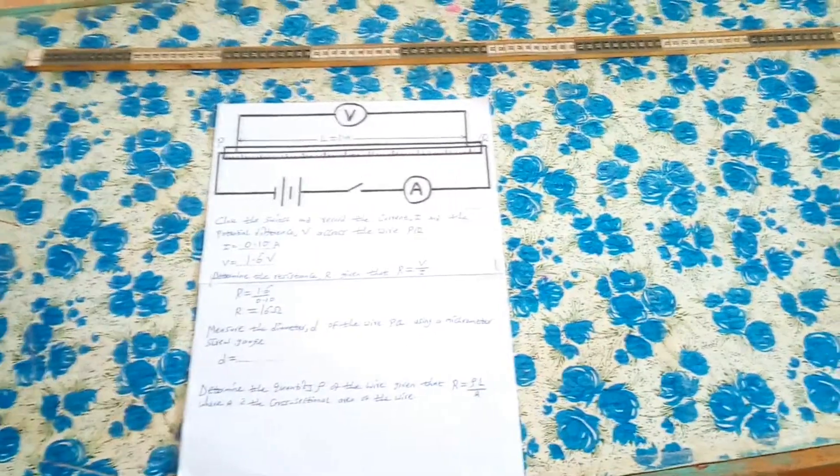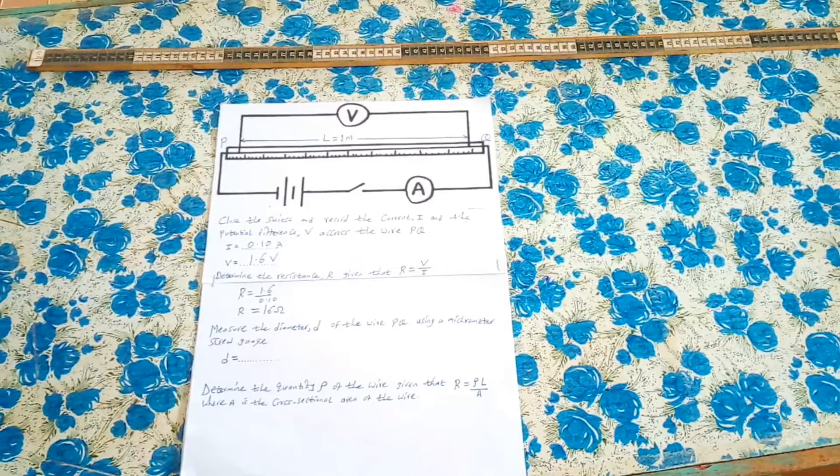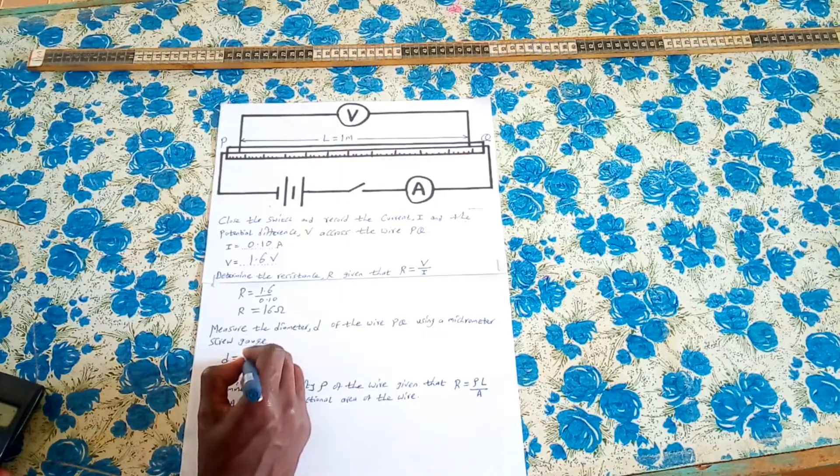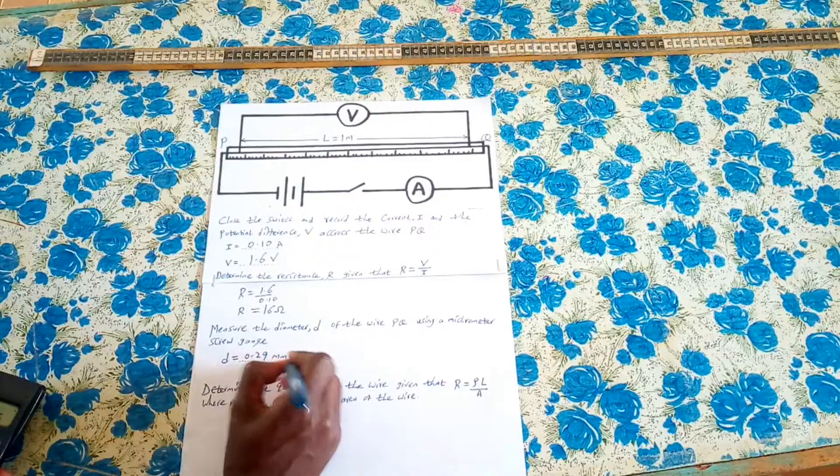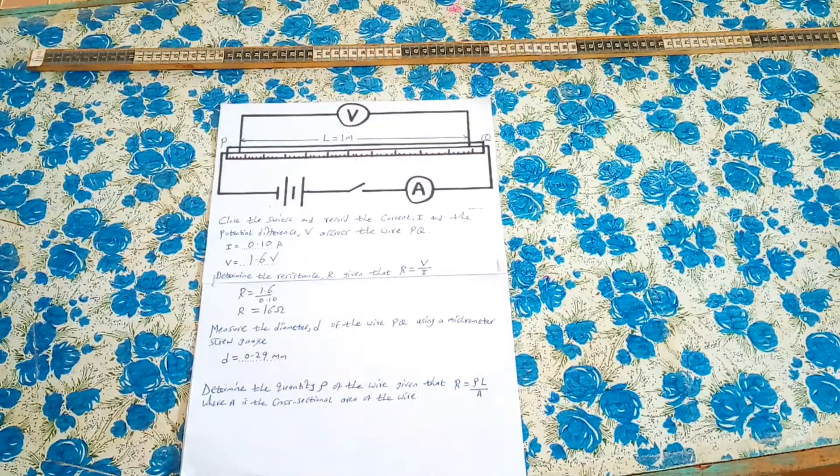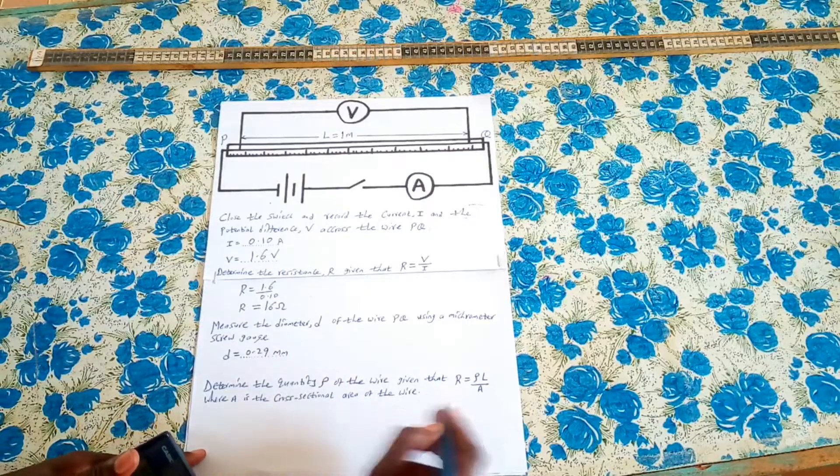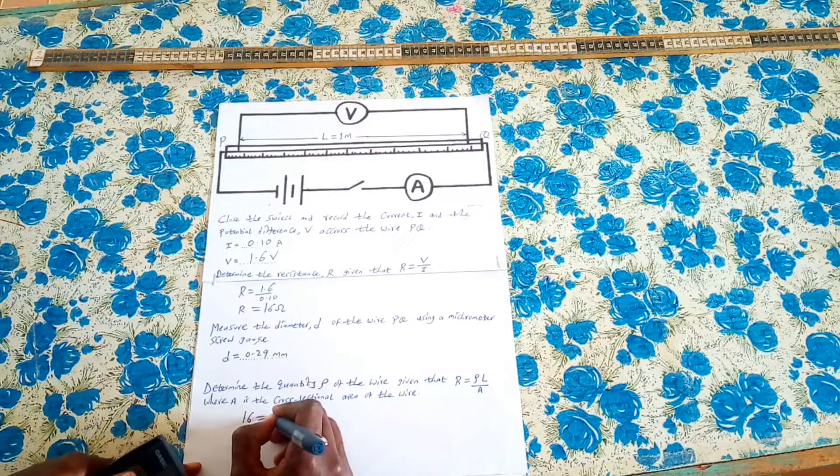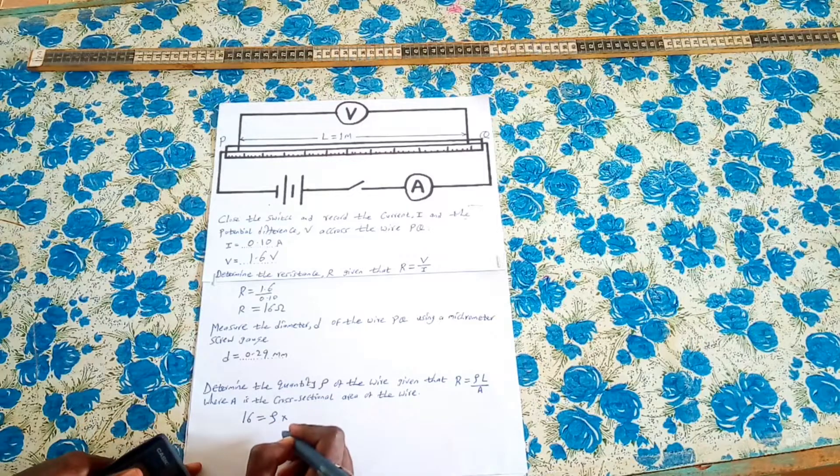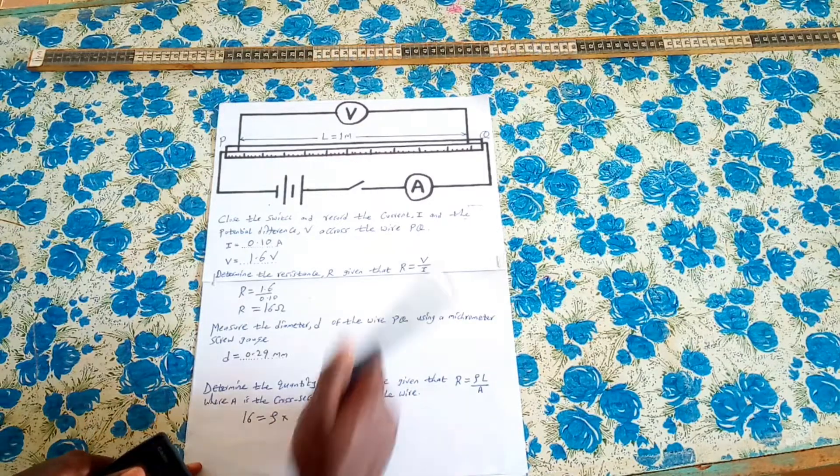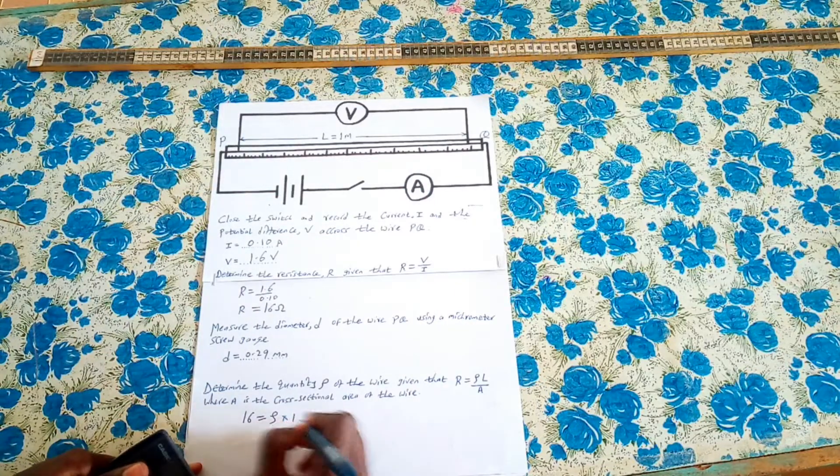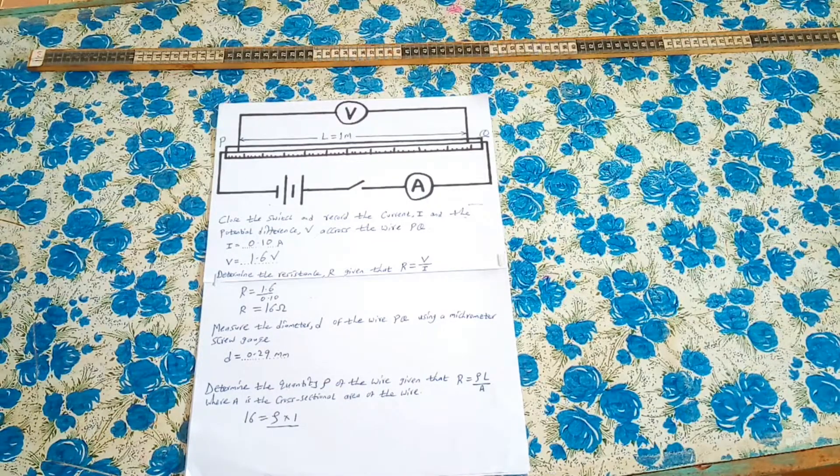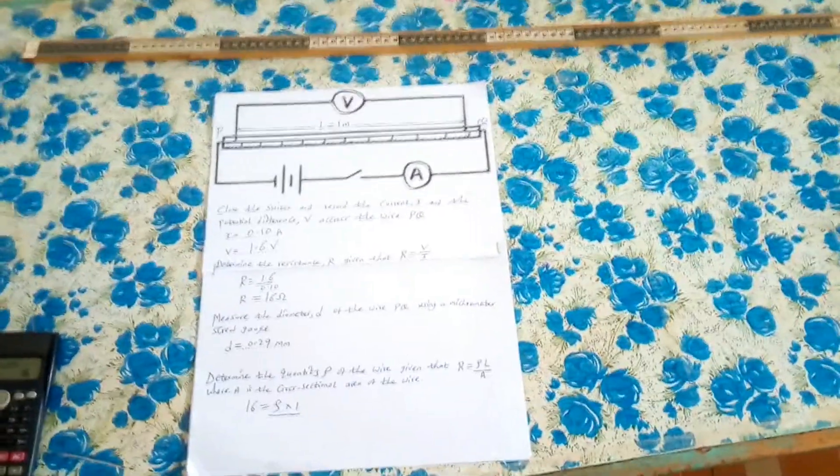Then from there we are going to measure the diameter of the nichrome wire. The nichrome wire we are using is 0.29 mm, that is the thickness of the nichrome wire. We can replace the values. Resistance is 16, equals the resistivity times length. Length is we are working with 1 meter, then divided by cross-sectional area of the nichrome wire. So the cross sectional area will be given by pi r squared.